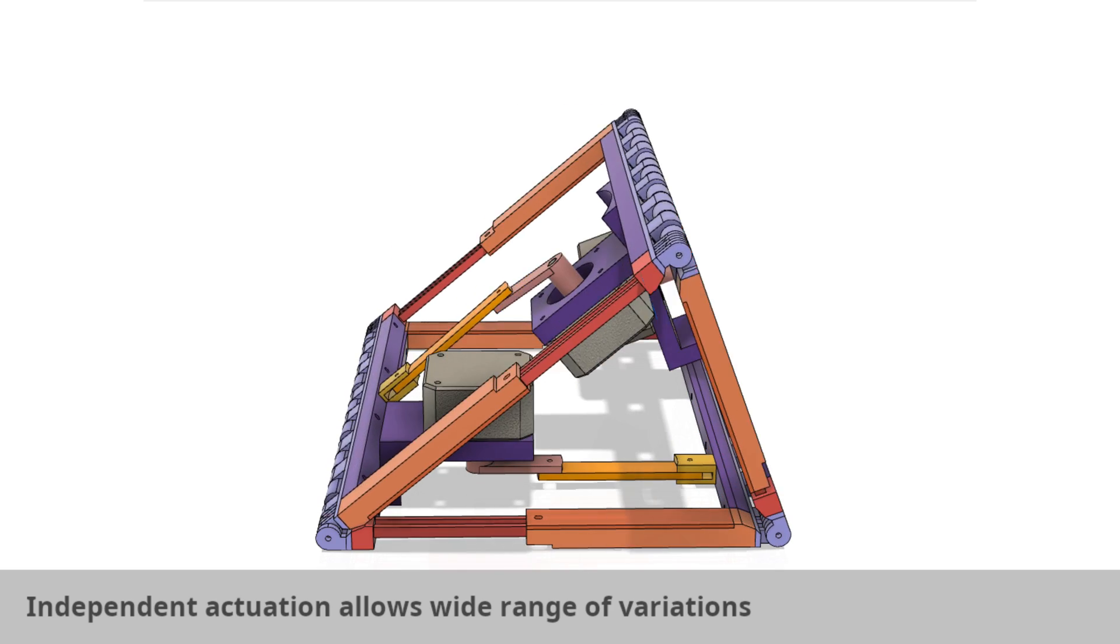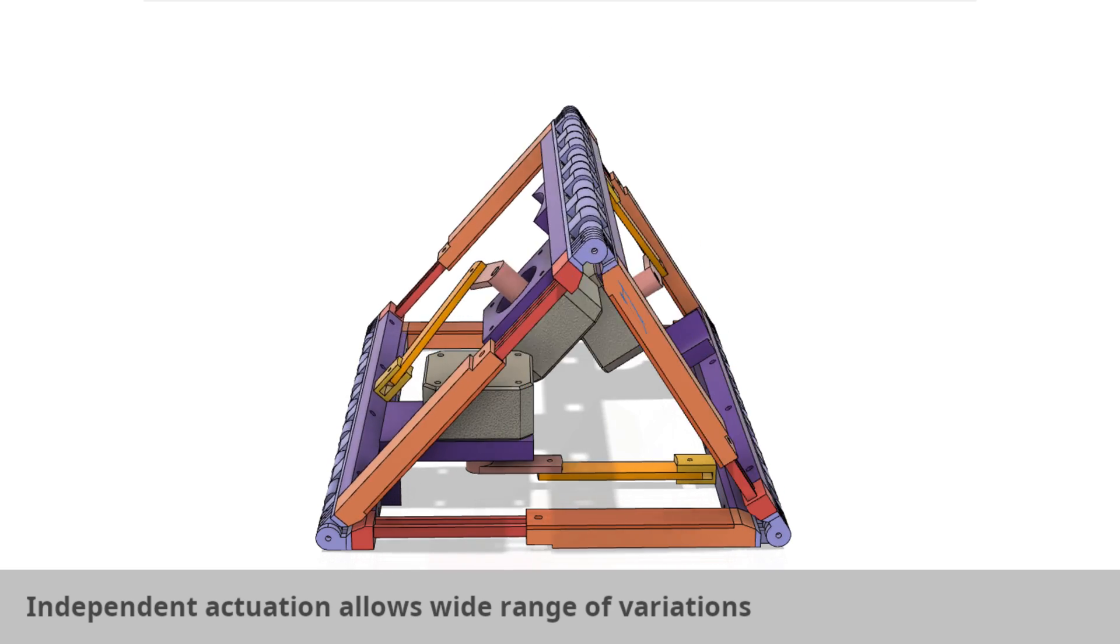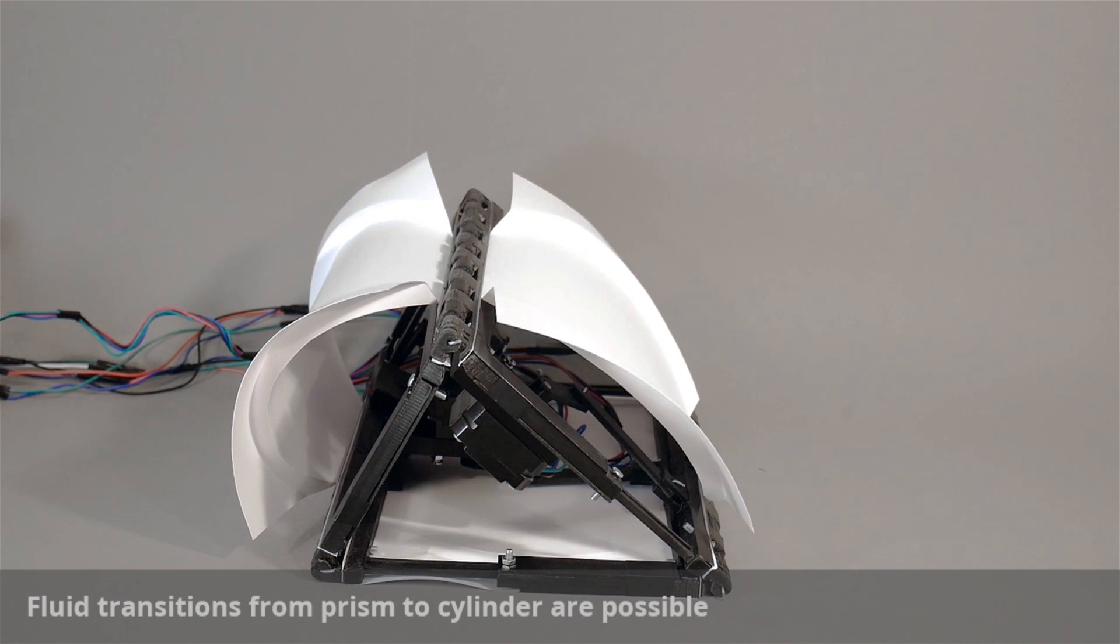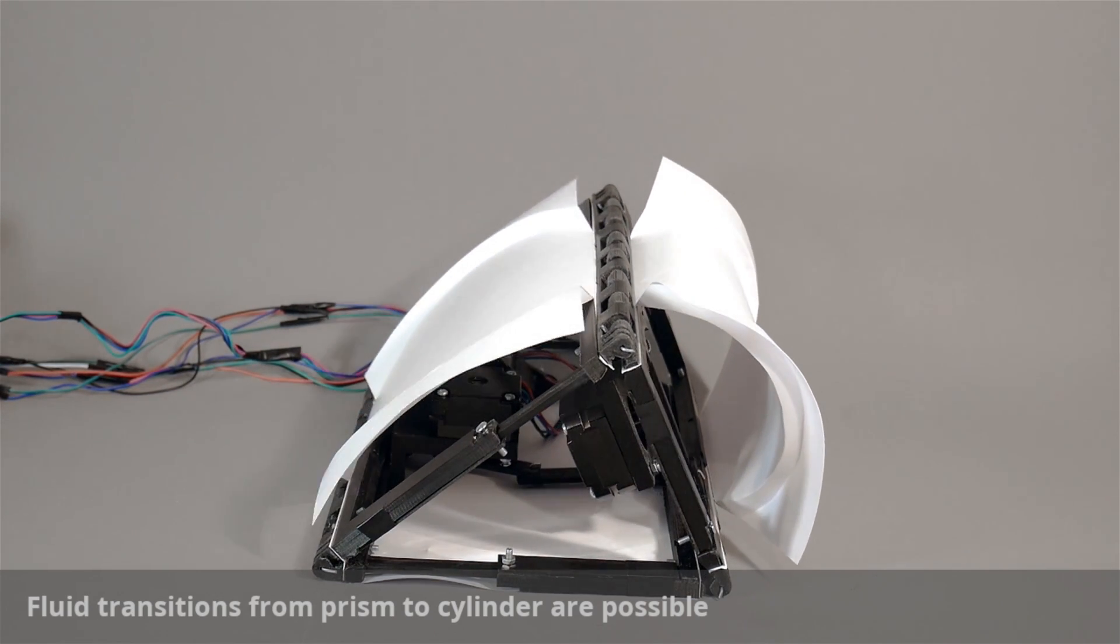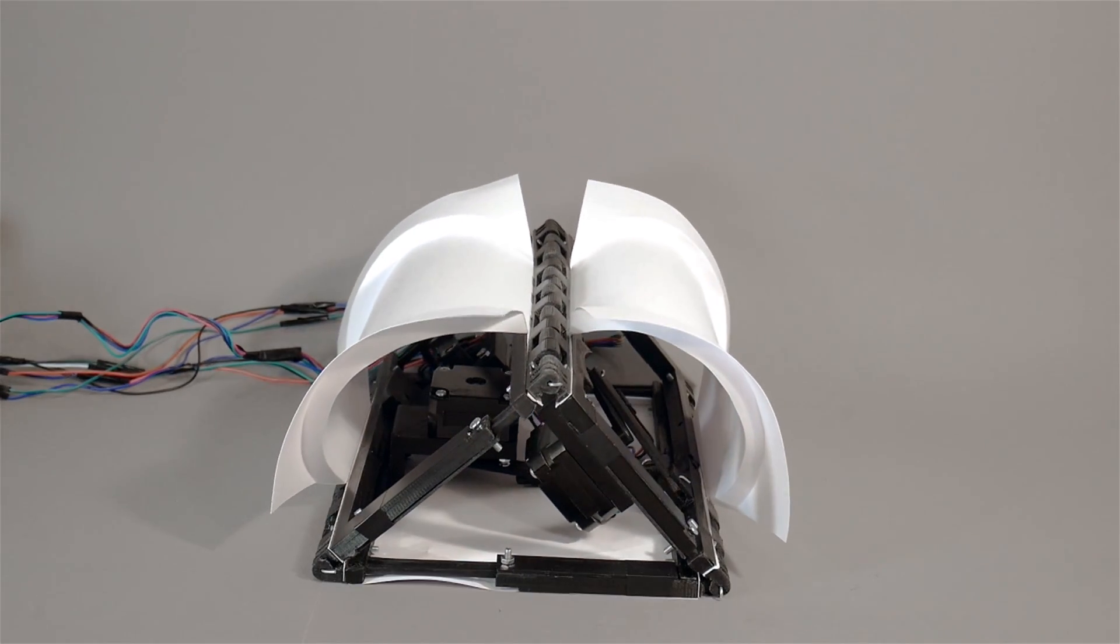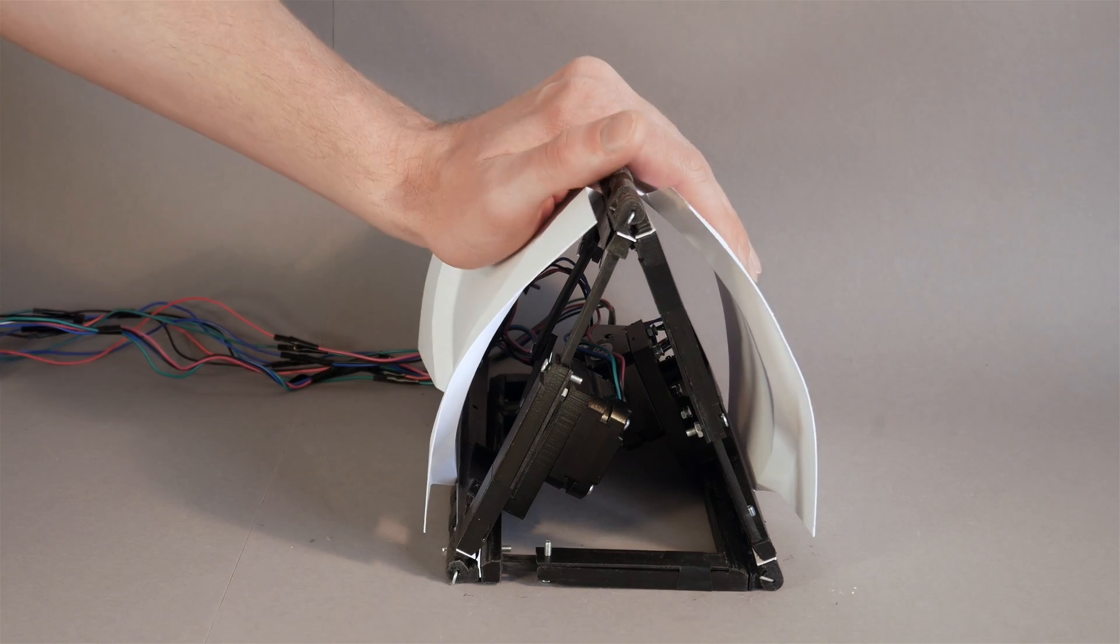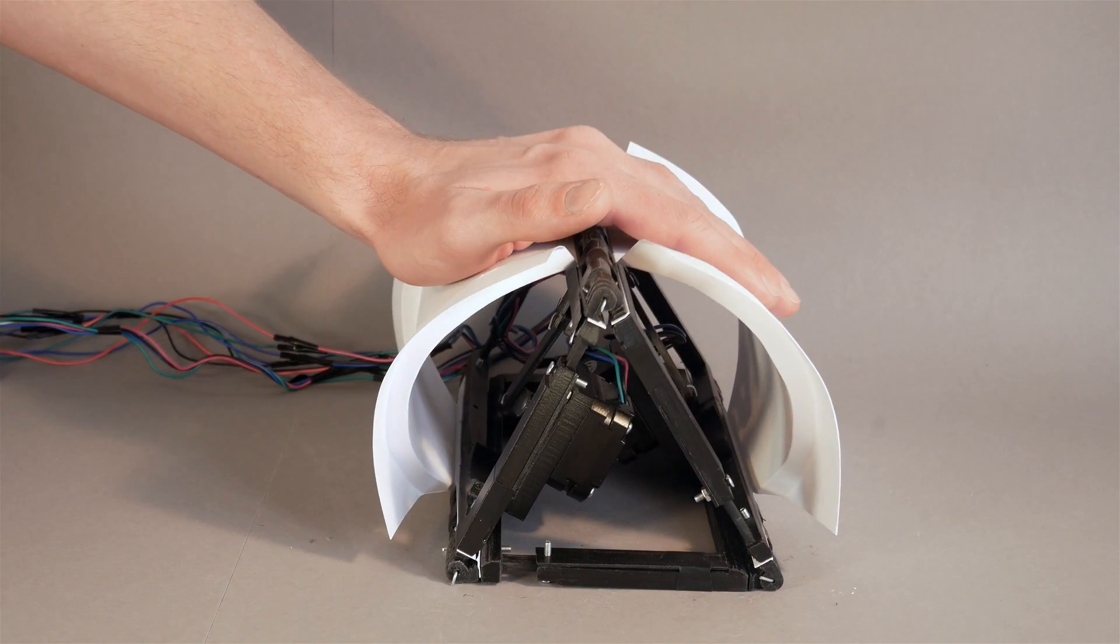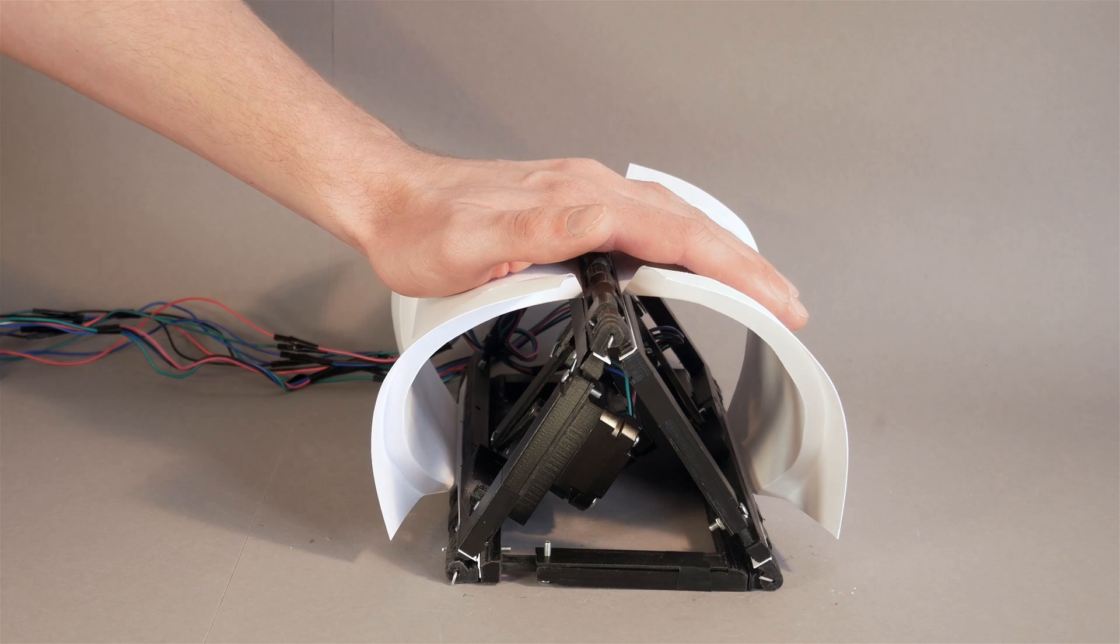Shiftly can render different shape variations, from a prism to a cylinder with partial side transitions thanks to the independent actuation. It can also transition states during direct user contact, allowing actively morphing shapes.